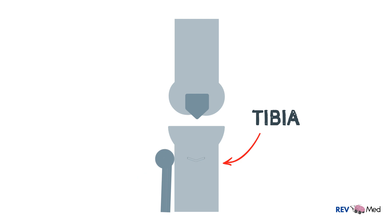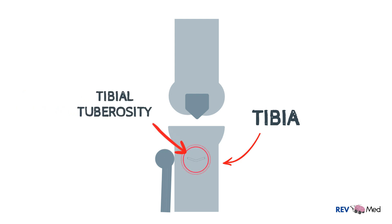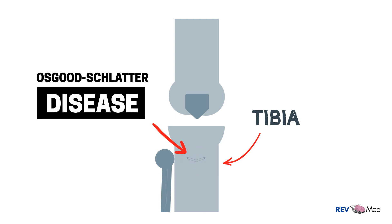The tibia has a tibial tuberosity which clinically gets inflamed and is referred to as Osgood-Schlatter disease.